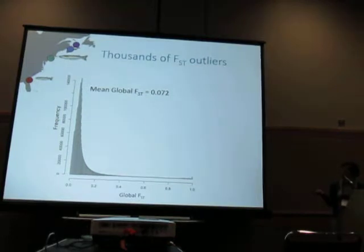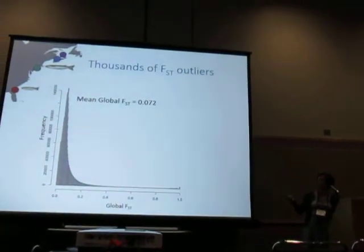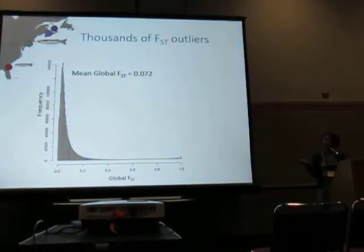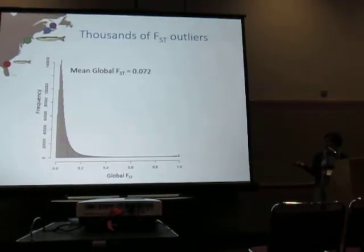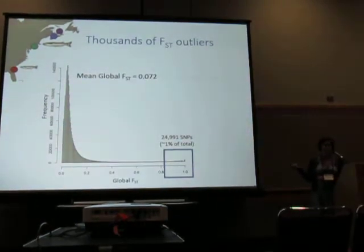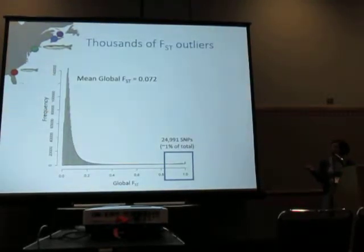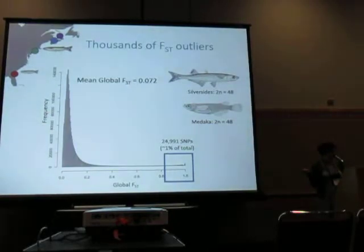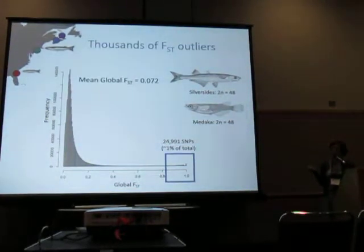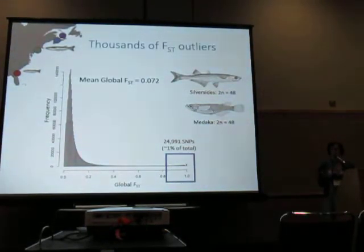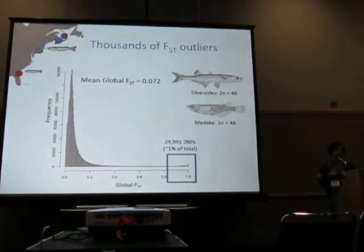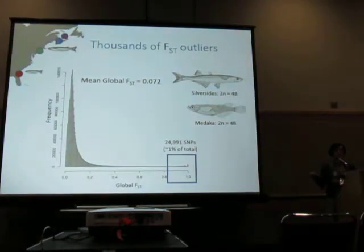Here I'm showing the distribution of global FST across all SNPs — global FST meaning across all four populations. For most SNPs, they're hovering right around a mean global FST of 0.07, but there's a really long tail with some obvious FST outliers. We used the program Outflank to identify about 25,000 SNPs in this high FST tail, comprising about 1% of total SNPs. We were really interested in how these SNPs were distributed across the genome, and because we don't have a reference genome for silversides, we mapped our transcriptome onto Medaka chromosomes. Silversides and Medaka share the same number of chromosomes, and synteny has been shown to be well conserved within this group, so we figured it would make a reasonable reference.